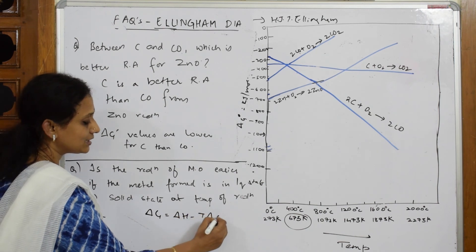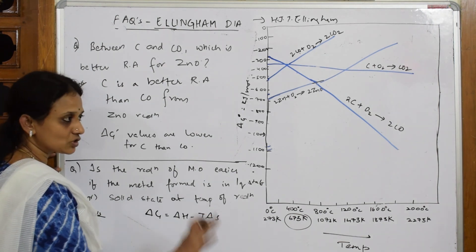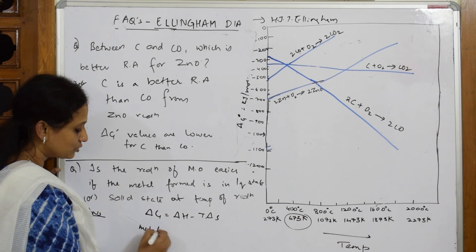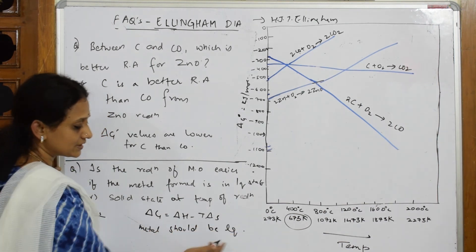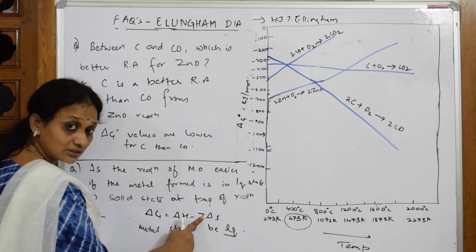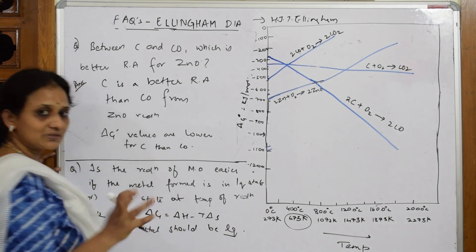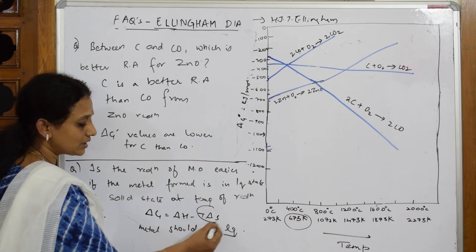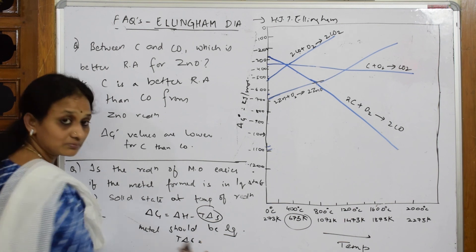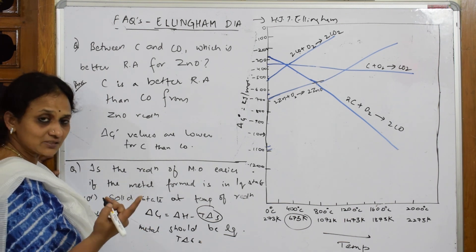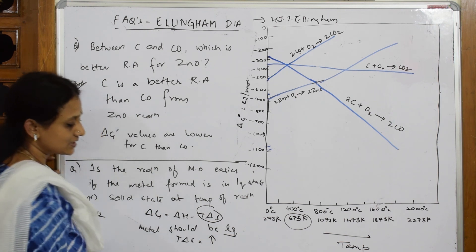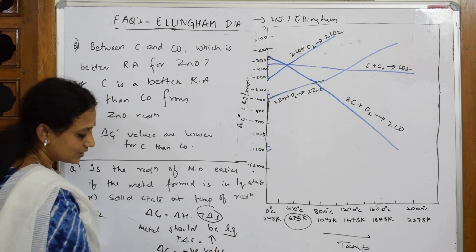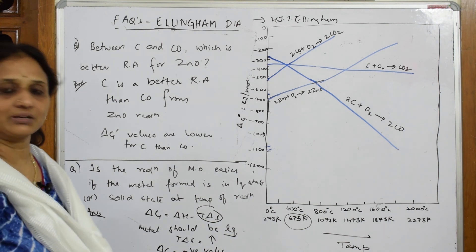Delta G = Delta H − T·Delta S. If the metal is in liquid state, temperature is high, so kinetic energy of molecules is very high. This means the quantity T·Delta S increases. When T·Delta S increases, delta G becomes less — meaning more negative. When delta G is negative, the reaction is feasible, so the metal should be in liquid state.